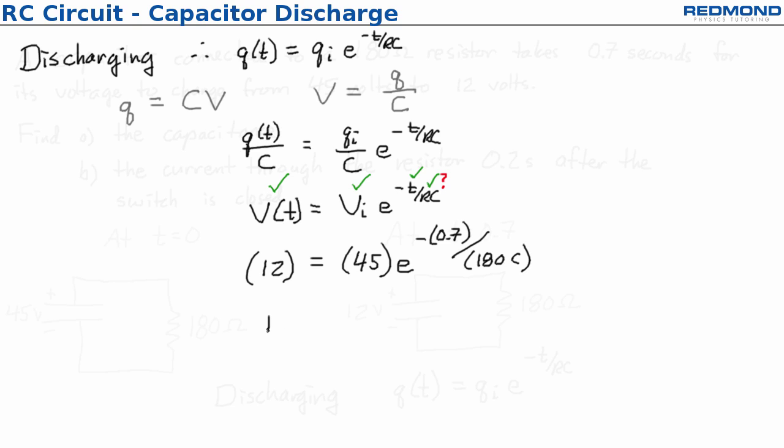The math is a little tricky here but not really. It's just a matter of getting used to working with logarithm functions. 12 over 45 is equal to negative 0.7 over 180C. If I take a ln of both sides I get ln of 12 over 45 is equal to negative 0.7 over 180C.